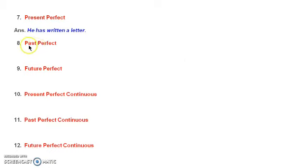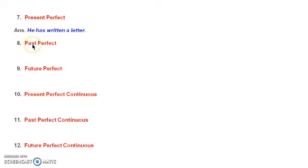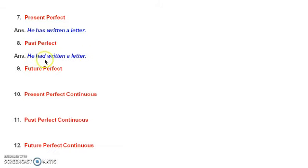For past perfect, again I use V3 form. To show that it is past time of action, I use the past form of 'have', which is 'had'. 'Had' plus V3 — V3 form of 'write' is 'written'. So: 'he had written a letter'.